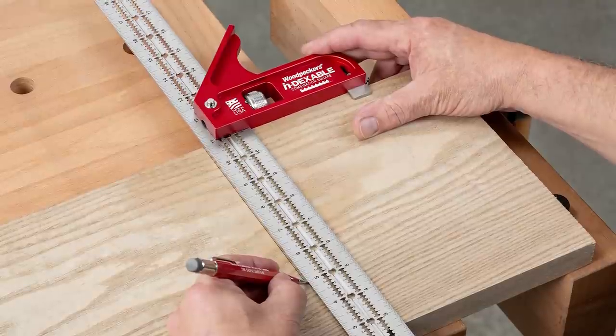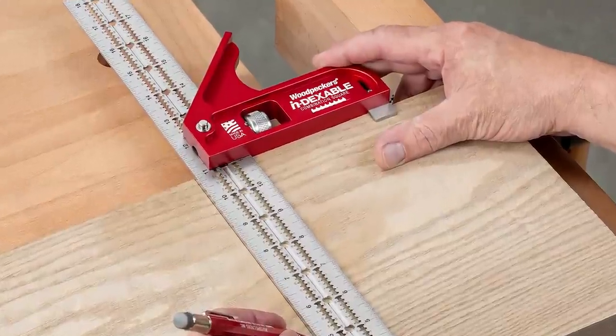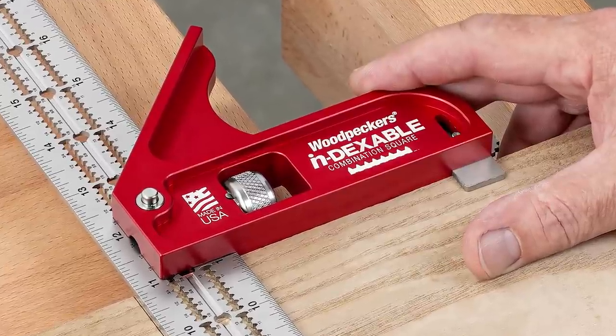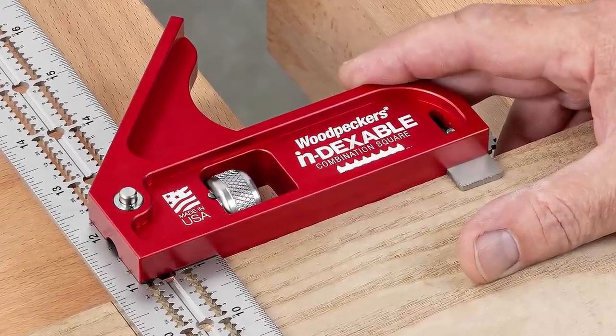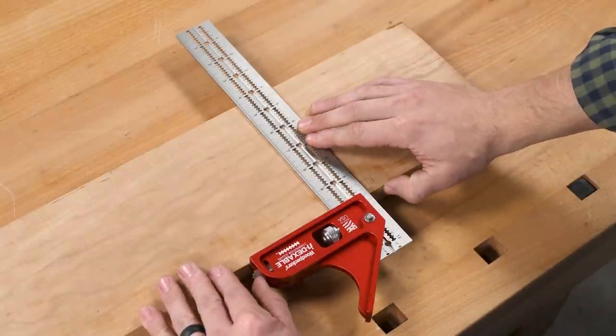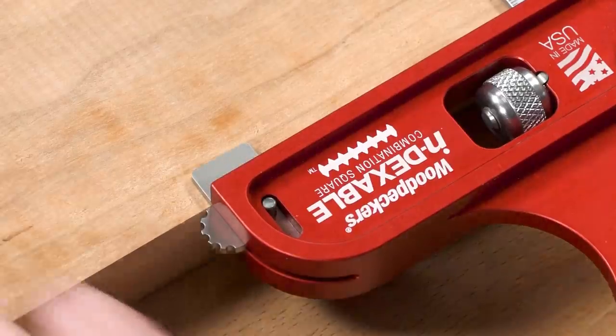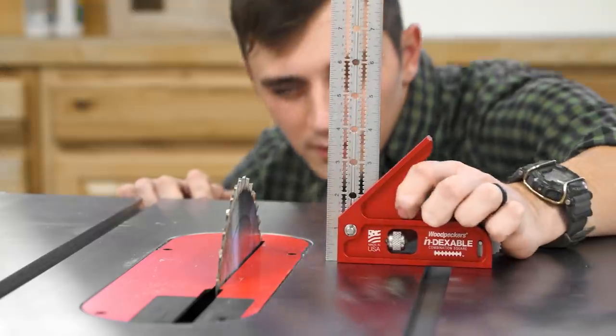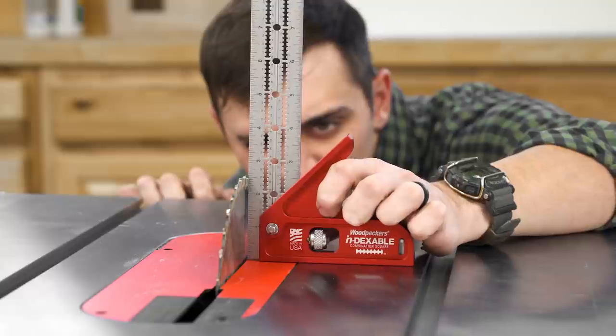One feature our customers love about our fixed squares is the shoulder that keeps the square flat on your work. We've built that same feature into our adjustable squares too. The sliding head support comes out to keep the head level when you need it, then tucks back inside the head, so it's out of the way when you need the base of the square to be flat.